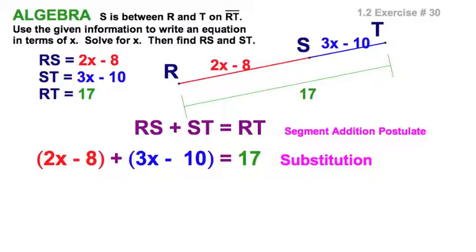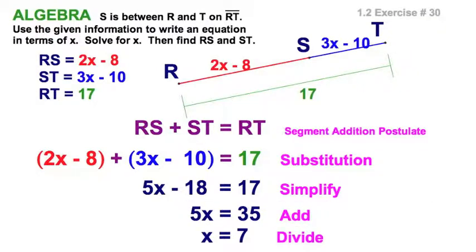I've got the red expression plus the blue expression equals the green expression. Now let's combine like terms — I've got x's and constants. Simplifying, I can add to both sides, then divide. If five x equals 35, each x is seven. But if you just write down seven — like some people do on their SATs — it's wrong, because you didn't answer the question. The question says find RS and ST. We've solved for x; that's just one part.